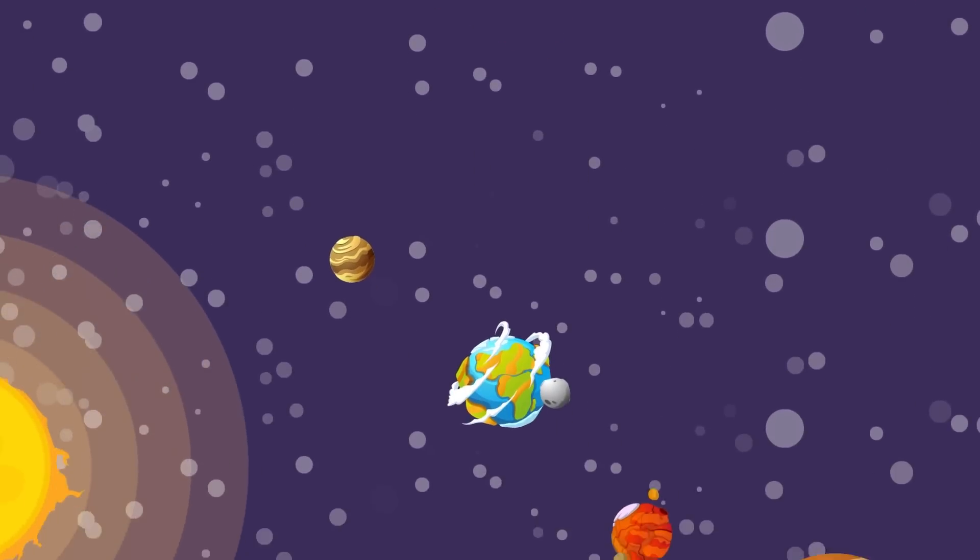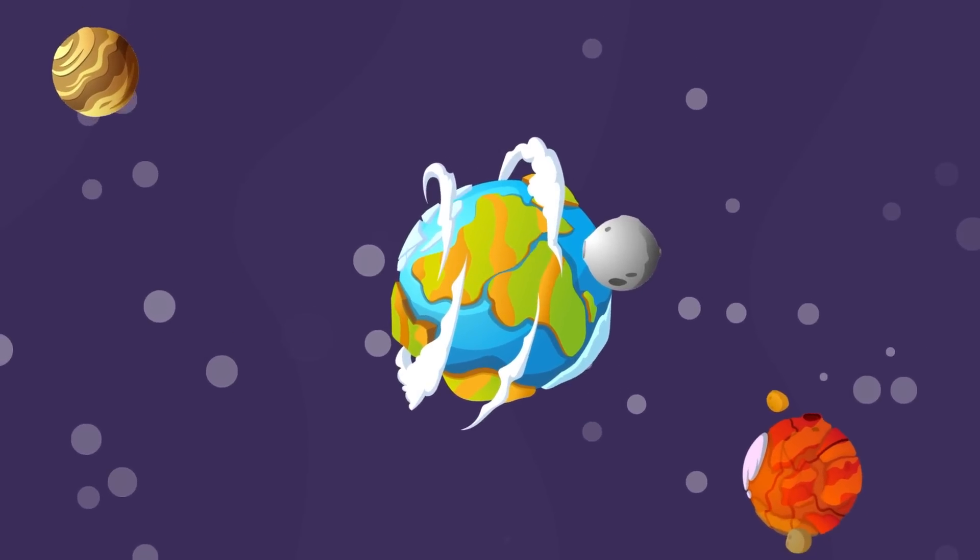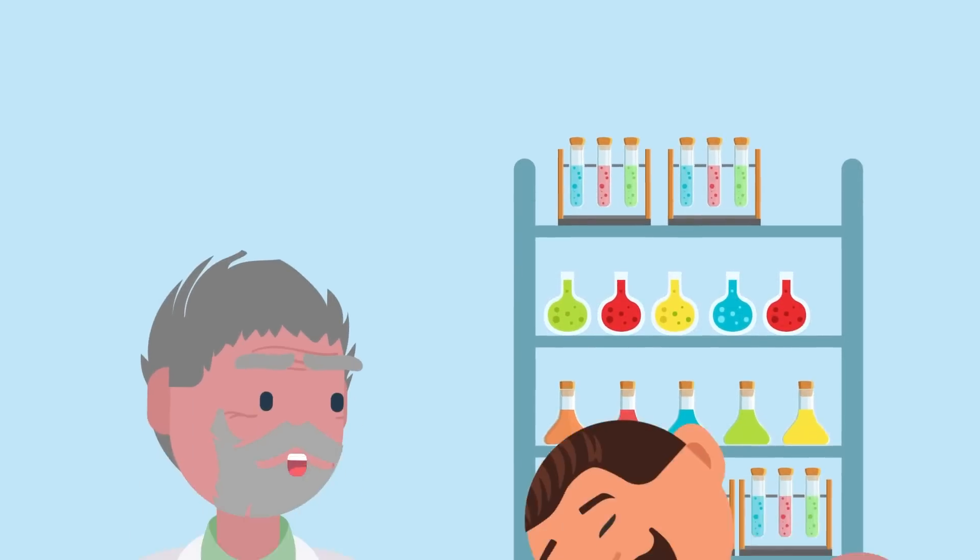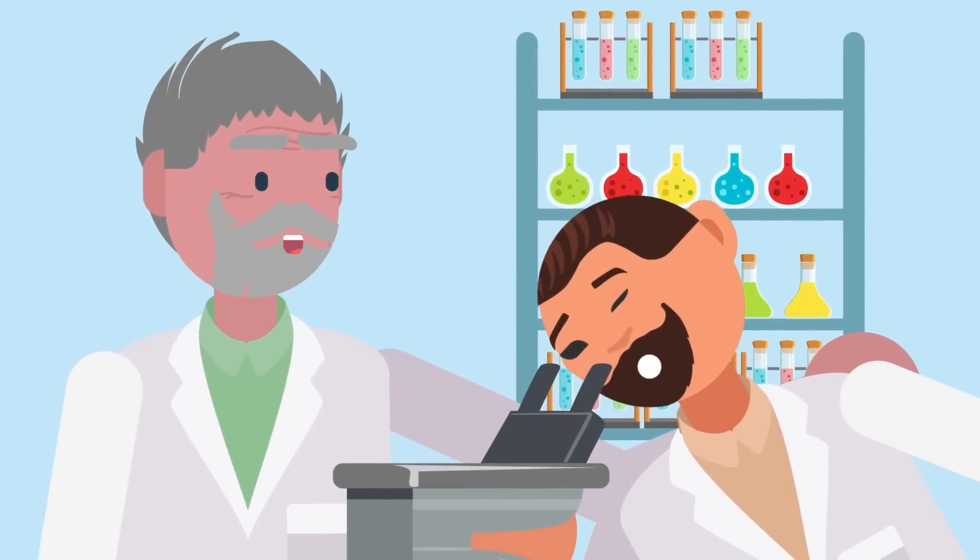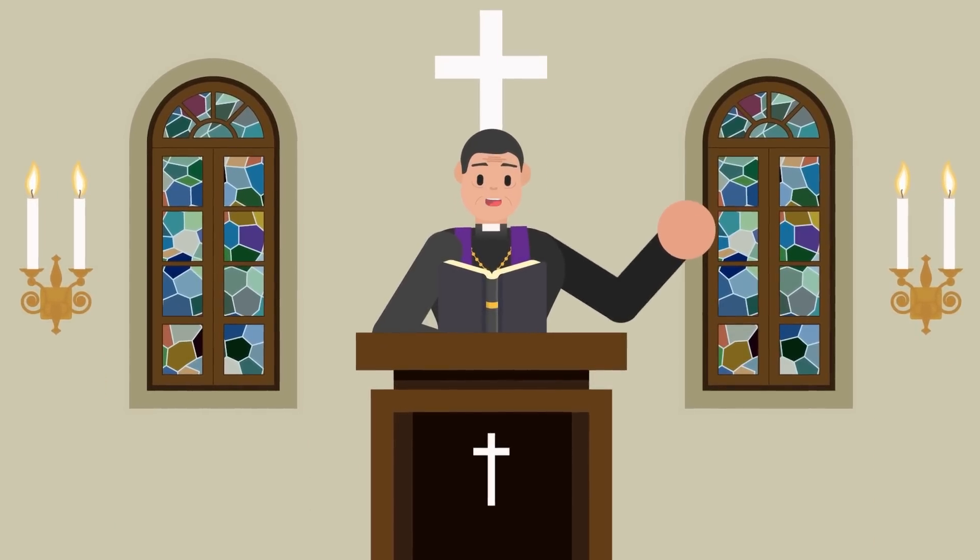Before we get into exactly how the earth and all the things on it could have come about in seven days, let's take a look at what events need to happen for the earth to form. There are two versions to this story. The first revolves around science and mathematics, the second is based on religion. Surprisingly, these two creation stories have several similarities.